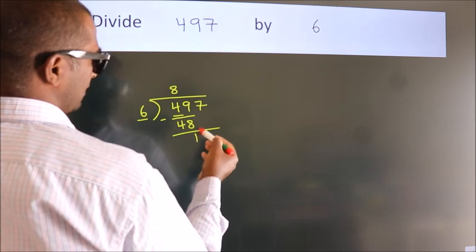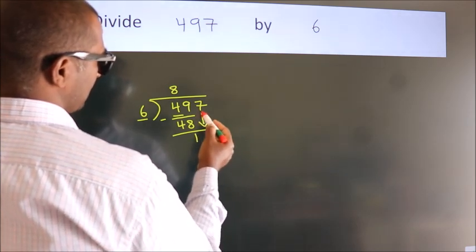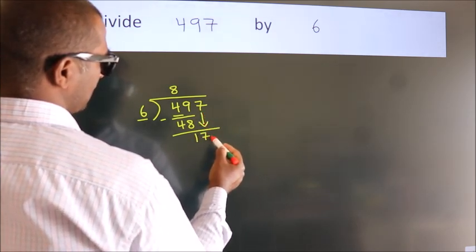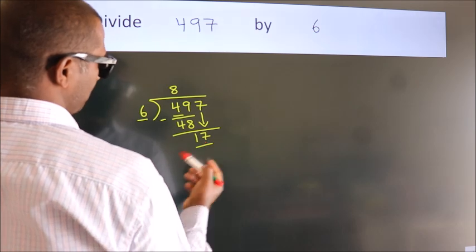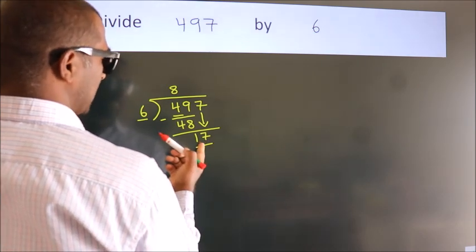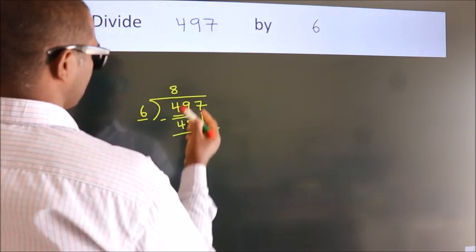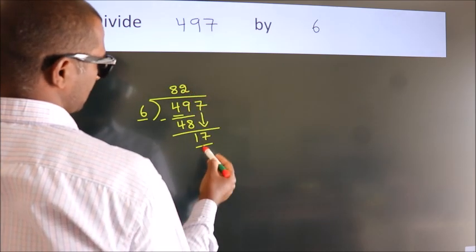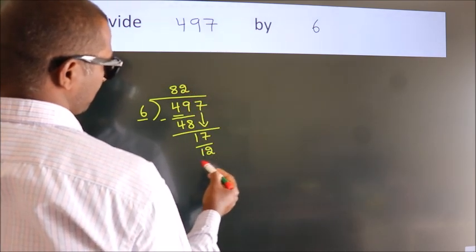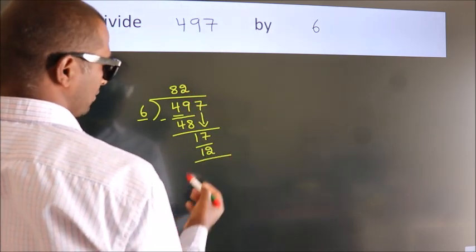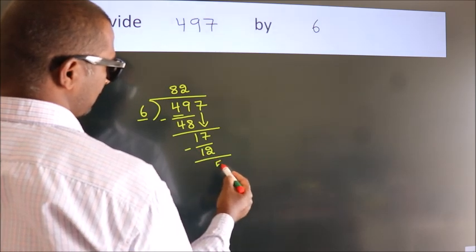After this, bring down the next number. So 7 down. So 17. A number close to 17 in the 6 table is 6 times 2 is 12. Now we subtract. We get 5.